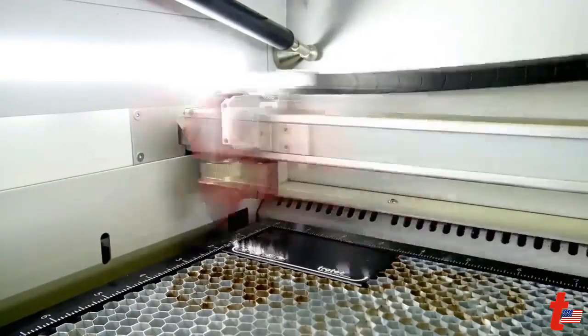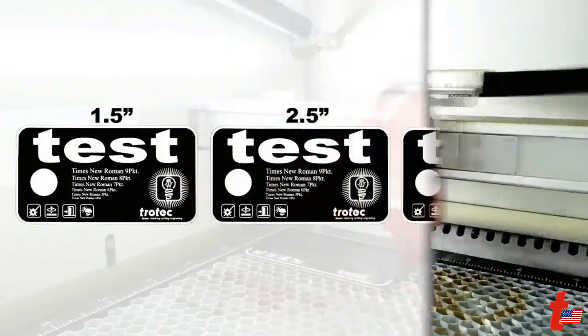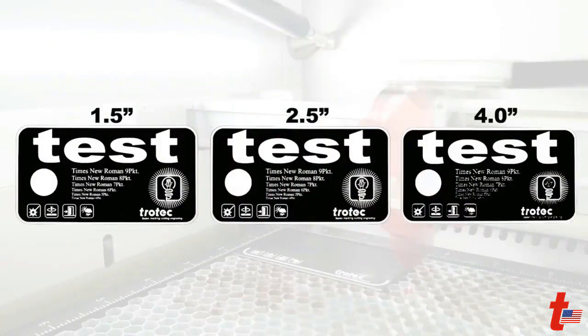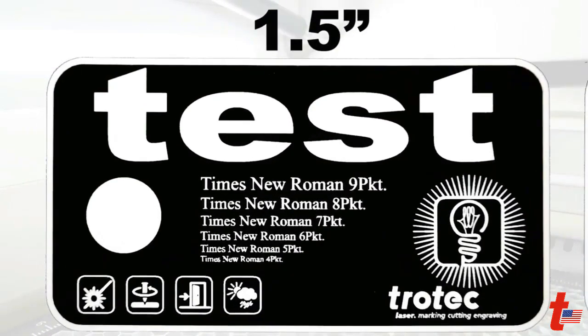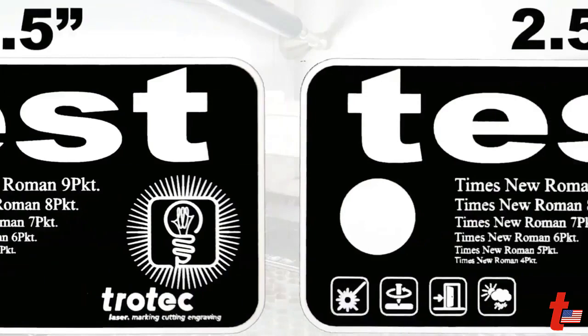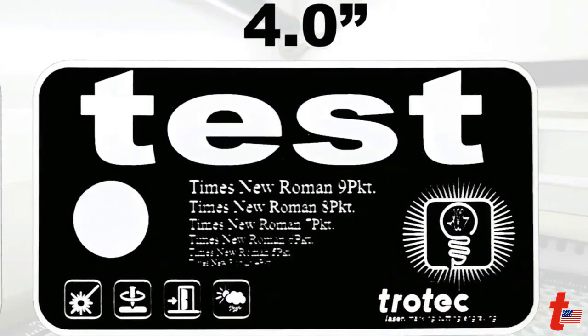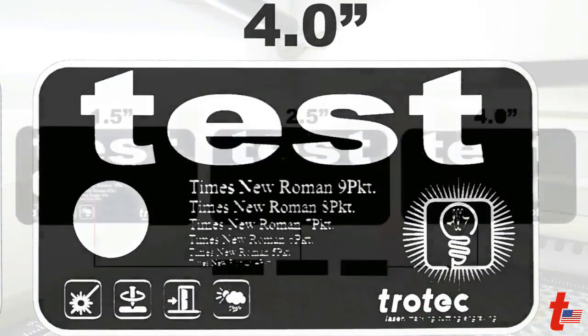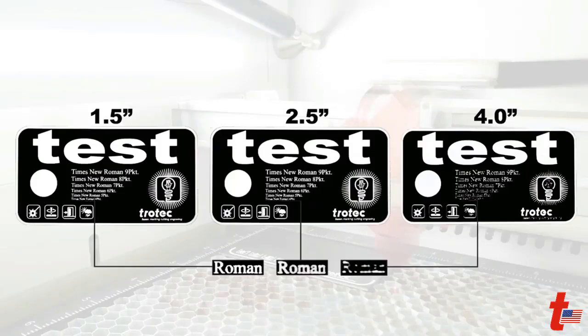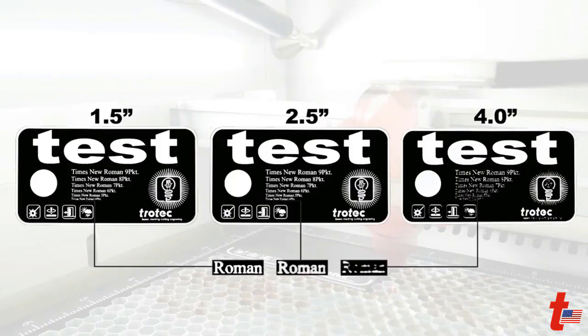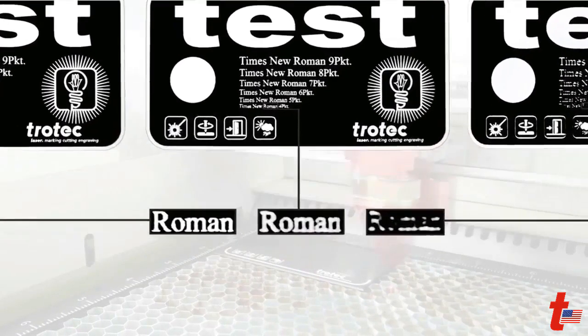Here we can observe the results on three pieces and we can see that the 1.5 inch lens is able to produce the clearest engraving in the areas where we have the smallest details. In contrast to the 4 inch lens test here, it doesn't look very good. And this happens due to the fact that the spot size is larger on the 4 inch lens than on the 1.5 inch lens.